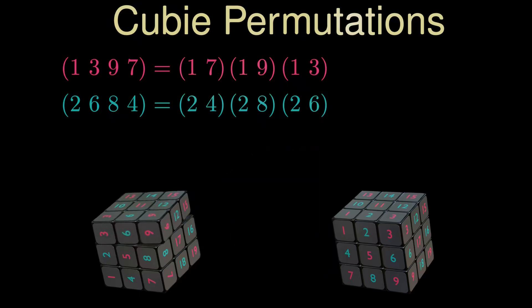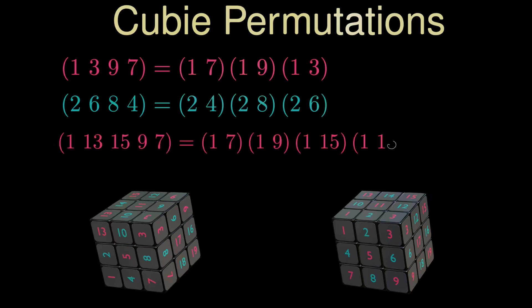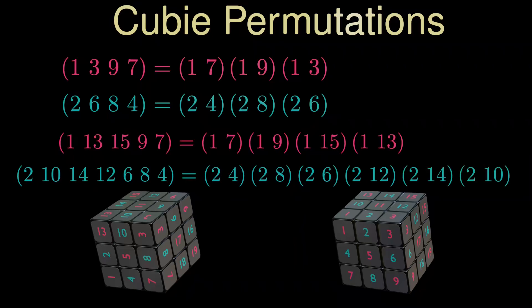Now we add a turn of the top phase. The resulting permutation is a five-cycle for the corner pieces and a seven-cycle for the edge pieces. This corresponds to four and six transpositions. Can you spot any pattern?